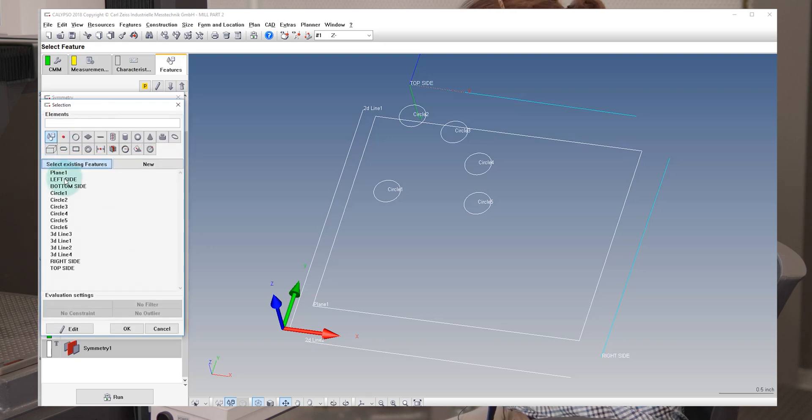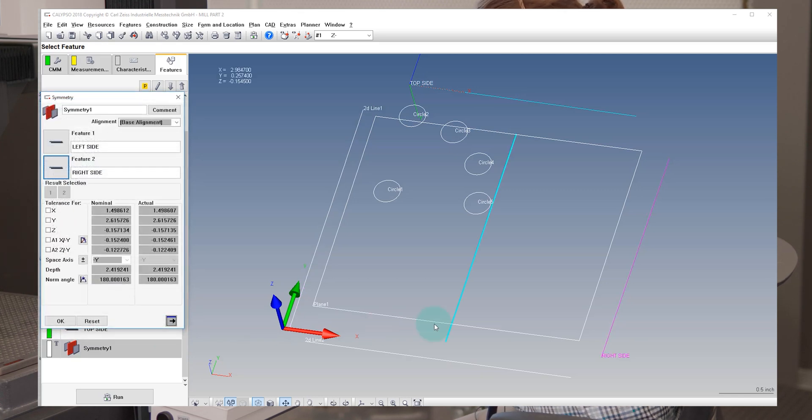Feature one is going to be, I'll do the center line going up and down first, going through the middle of the part. So we're going to choose left side. And then on the feature two, I'll choose right side.